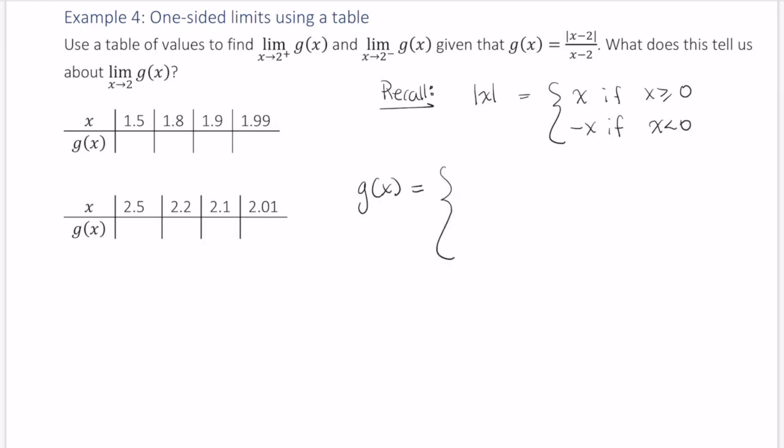And so I have x minus 2 over x minus 2. That's just 1, and that's if x is greater than or equal to some number.